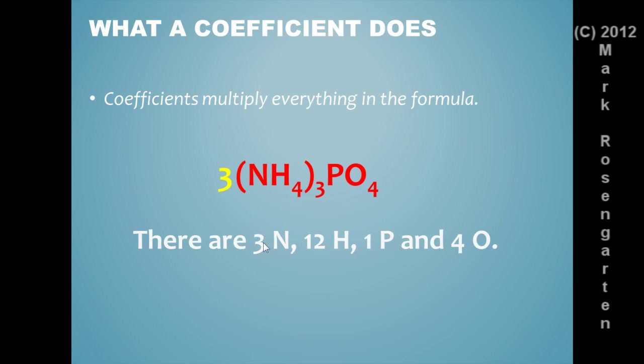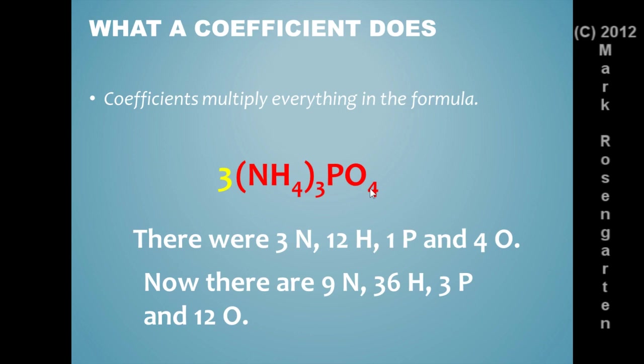We now have, instead of three nitrogens, we now have nine nitrogens. Instead of twelve hydrogens, we now have thirty-six hydrogens. Instead of one phosphorus, we now have three phosphorus. Three phosphorus and we have four times three is twelve oxygens. So that's what a coefficient does, multiplies everything that comes after.